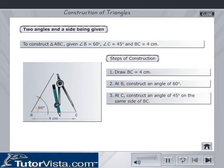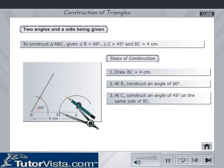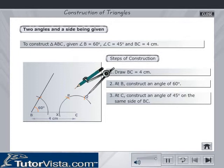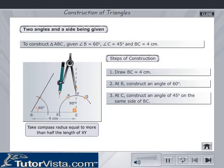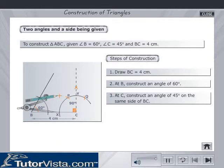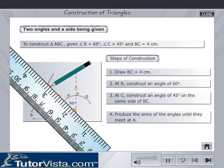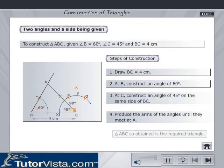At C, construct an angle of 45 degrees on the same side of BC. Produce the arms of the angles until they meet at A. Triangle ABC so obtained is the required triangle.